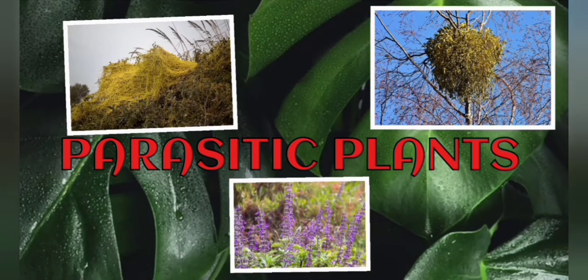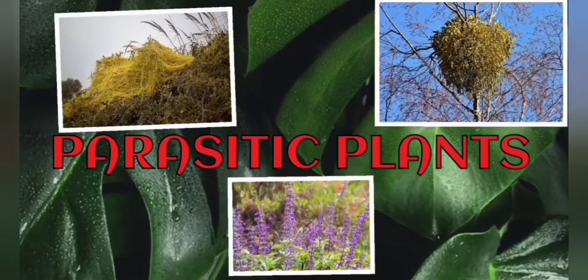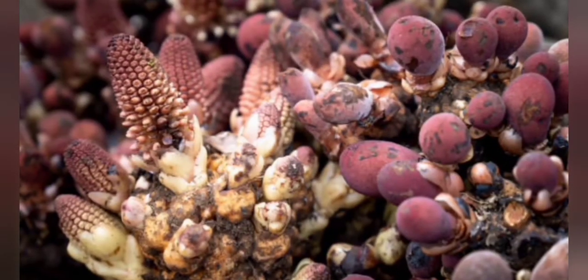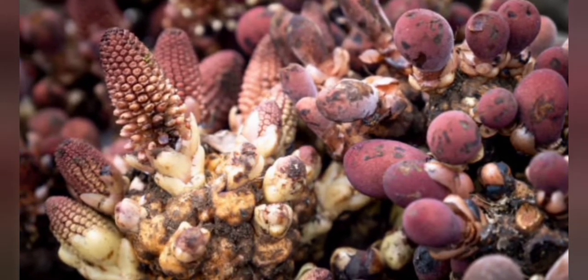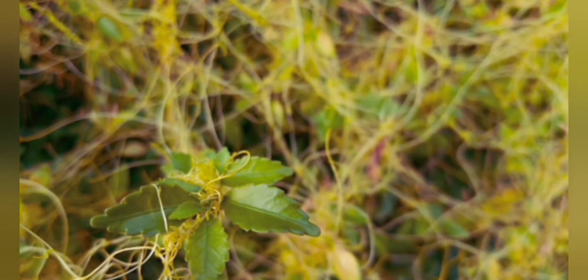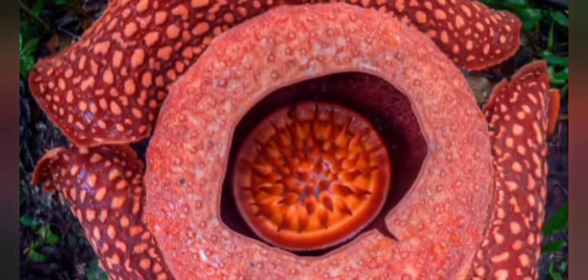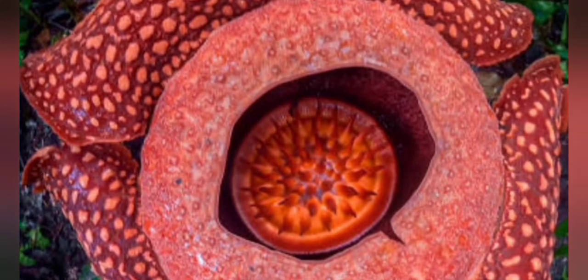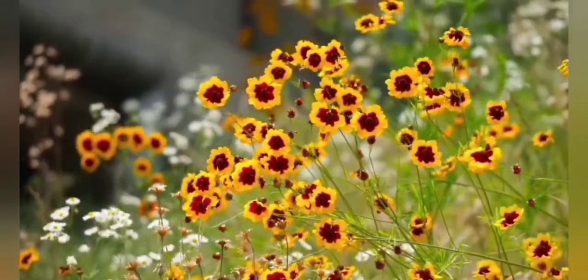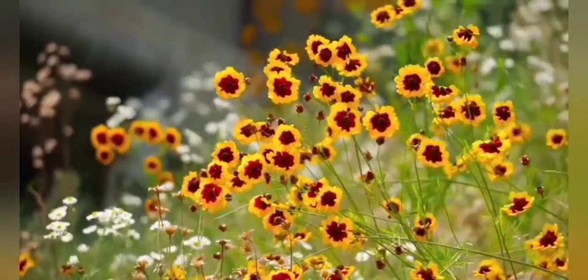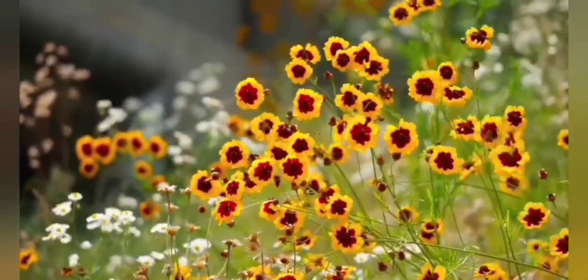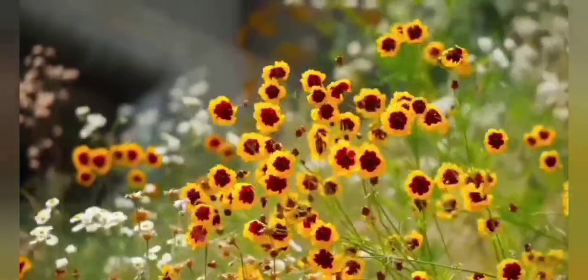Today let me explain about parasitic plants. Most green plants can make their own food, but some plants which are non-green, due to the absence of chlorophyll, obtain nutrition from other host plants. These parasites are classified into two types: total parasitic plants and partial parasitic plants.